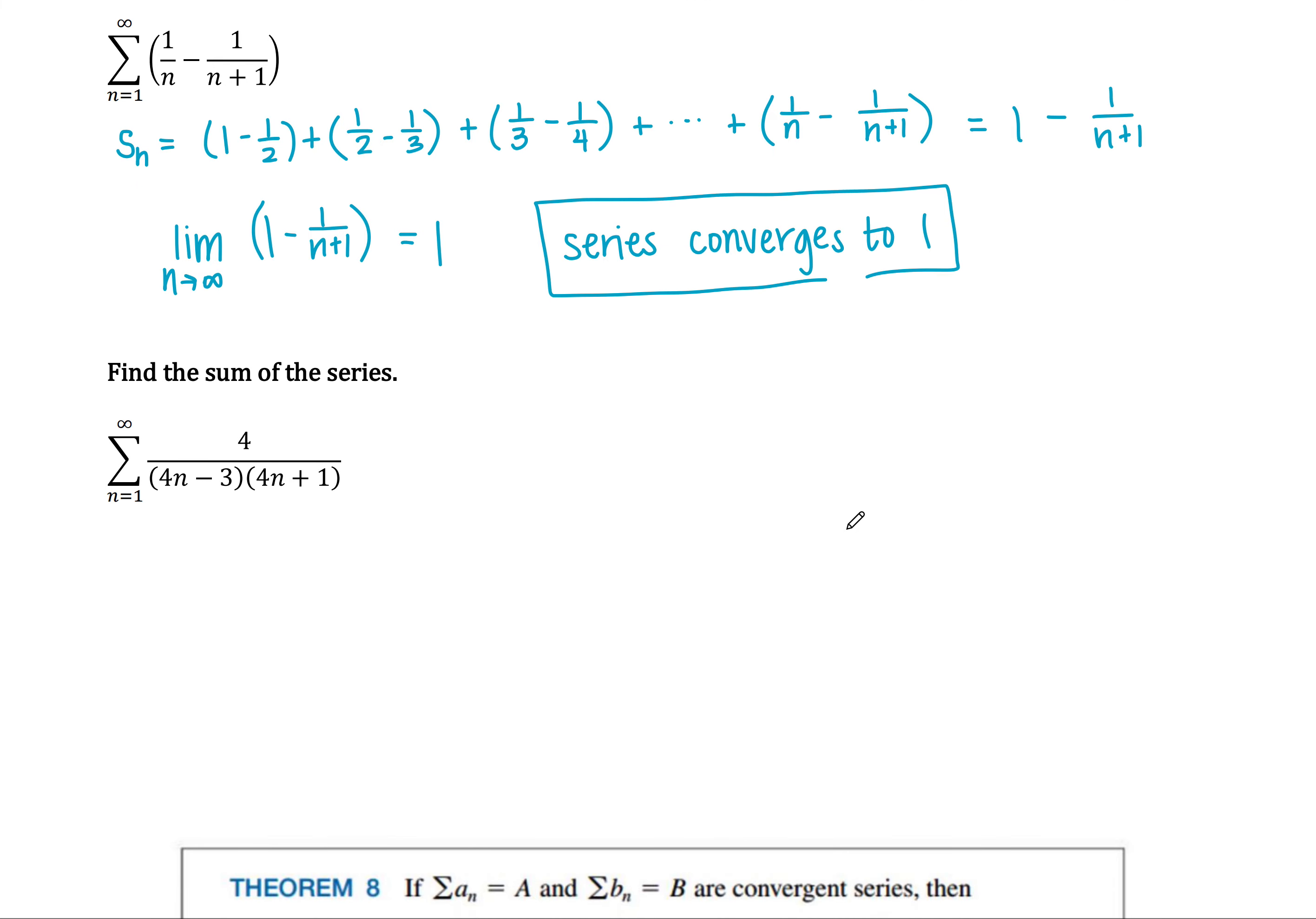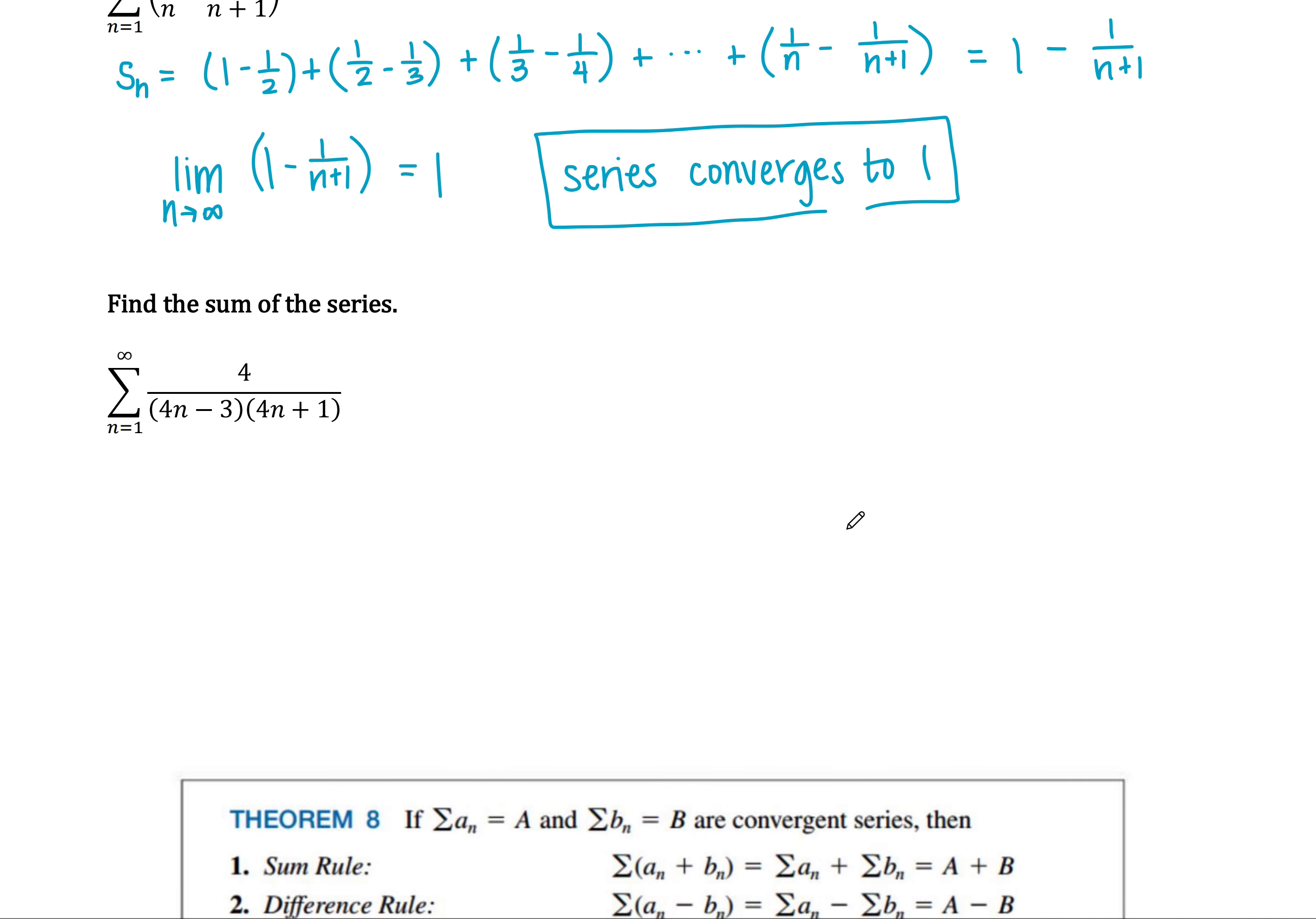And I'm going to do one more here in this video. This one says find the sum of the series. This is the series from n equals 1 to infinity of 4 over 4n minus 3 times 4n plus 1.